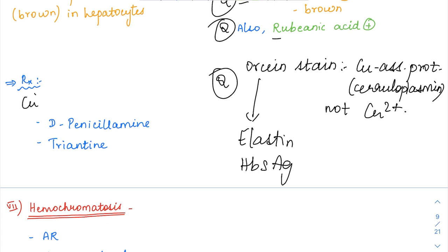For treatment, you can use copper chelators like D-penicillamine and trientine, which can take up copper and cause the excretion of copper.